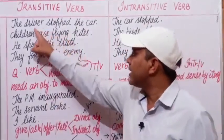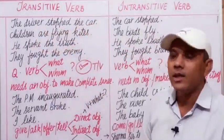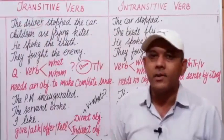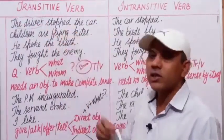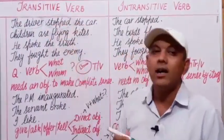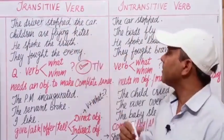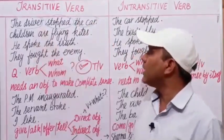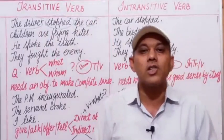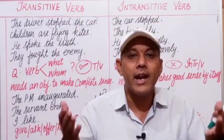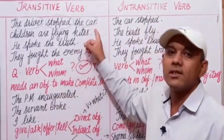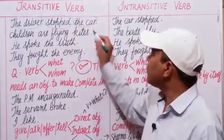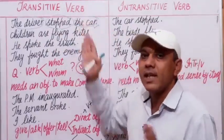For example: 'The driver stopped the car.' Here the subject is 'the driver,' the doer of the action. What did he do? He stopped the car. What did he stop? The car — the object. If we say only 'The driver stopped,' we need an object to complete the sense of this sentence. 'The driver stopped the car' — we need this object to complete the sense.